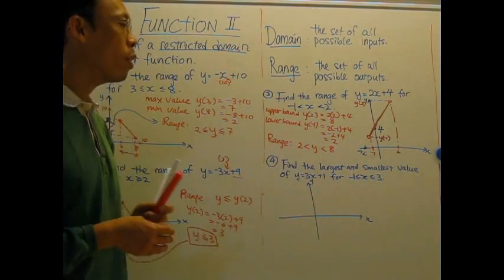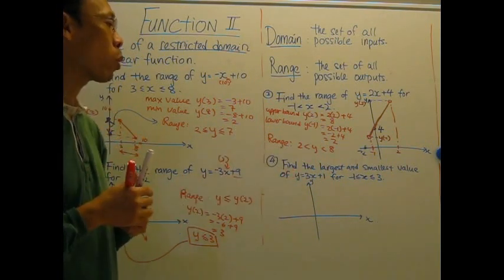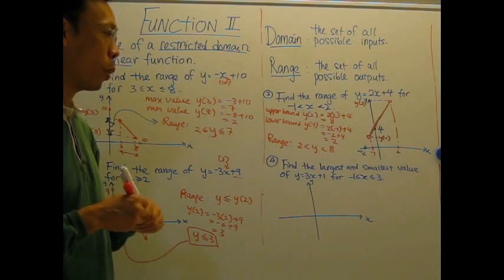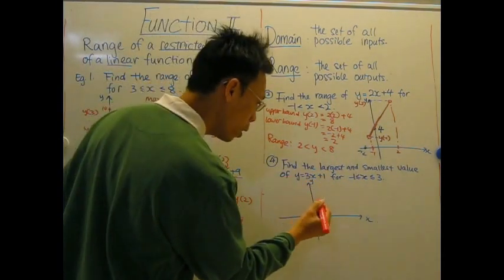And here we need to find the largest and smallest value for y of 3x plus 1 for x between negative 1 and 3. So first of all, identify the y-intercept. 1 is 1.